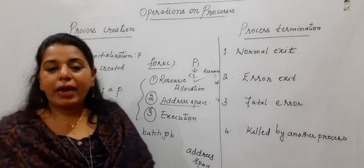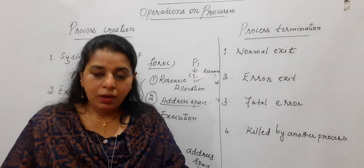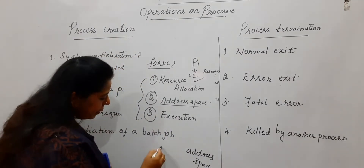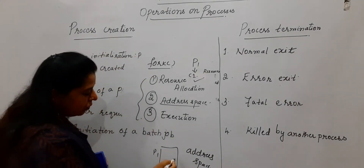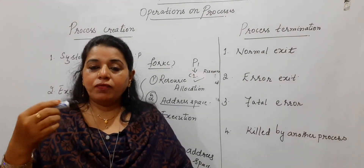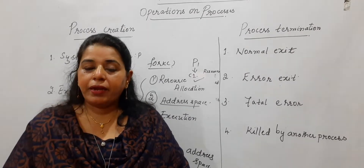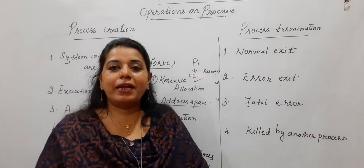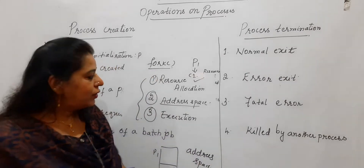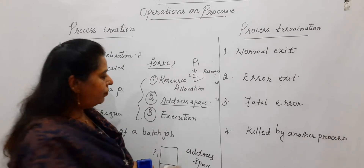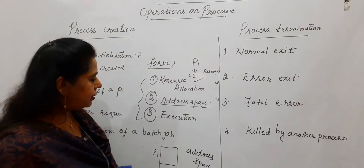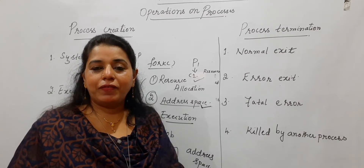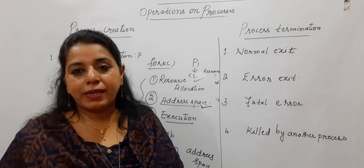The second aspect is the address space. The child process is a duplicate of the parent process and will share the same address space. All the attributes in the process control block of the parent are also applicable to the child, except for one attribute: the process ID. The process ID is different for the child and for the parent.